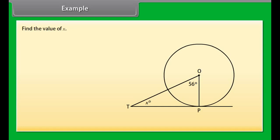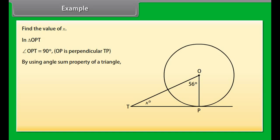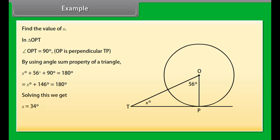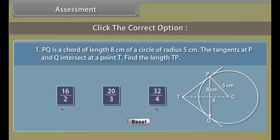Example. Look at the figure. Find the value of X. In triangle OPT, angle OPT is 90° because OP is perpendicular to TP. By the angle sum property of a triangle: X° + 56° + 90° = 180°, so X° + 146° = 180°, giving X = 34°. Hence the value of X is 34 degrees.